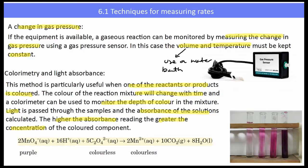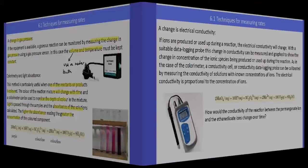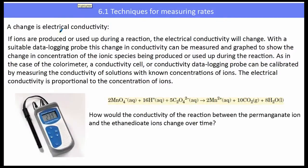And finally, another simple but effective way to determine or measure the reaction rate is a change in electrical conductivity. So how conductive is the solution? If ions are produced or used during a reaction, the electrical conductivity of that solution begins to change. With a conductivity probe, we can measure the change in conductivity and we can then plot that on a graph to show the change in concentrations of the species being produced or consumed.